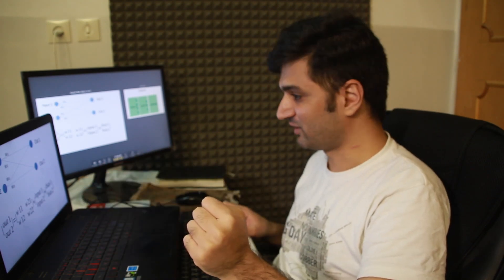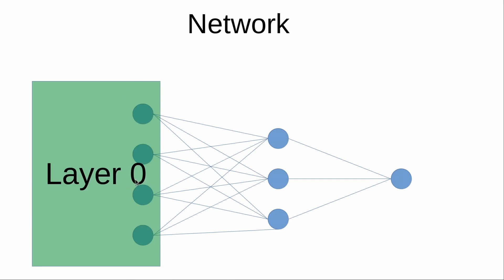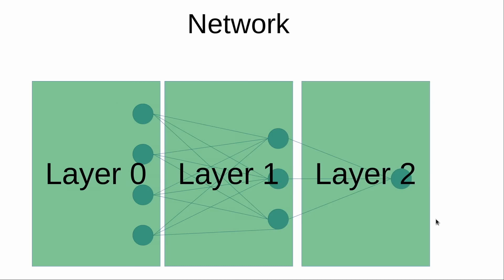I call this whole system the 'network', and I divide it into layers. For example, layer zero, layer one, and layer two. Each layer contains nodes with values. Each layer also contains weights and biases — except layer zero, the input layer, which has no weights or biases.